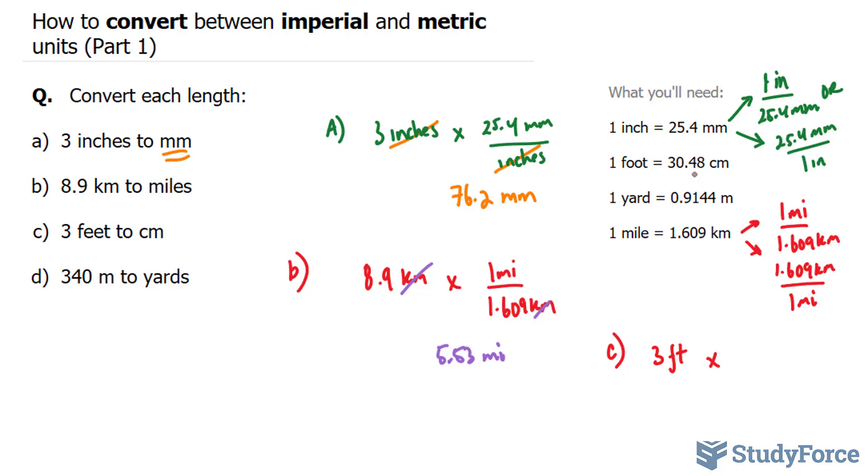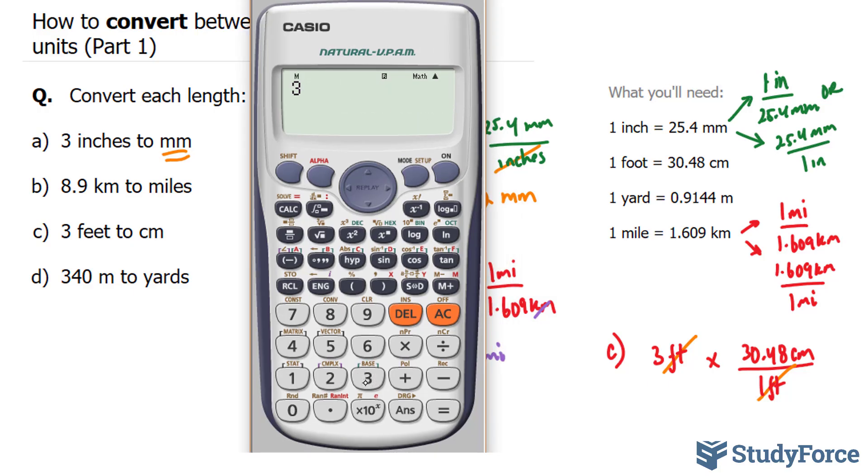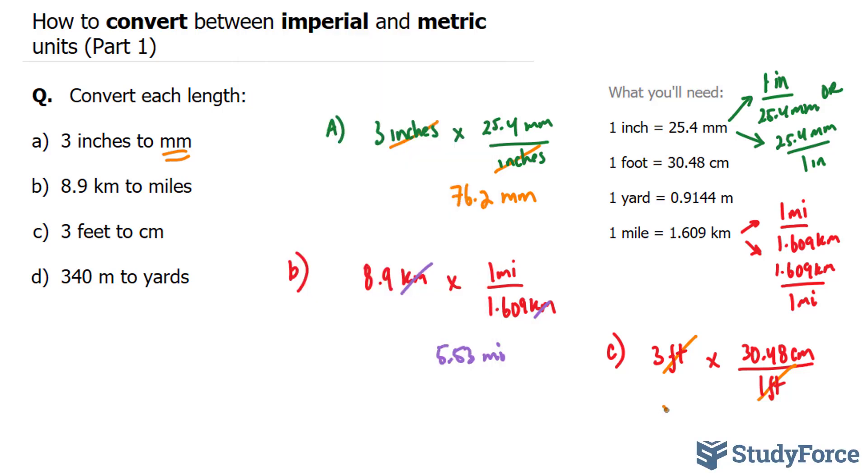This can be written in two ways. It can be written with the foot at the top or the foot at the bottom. We'll choose the version where the foot is at the bottom. Using our calculator, we end up with 3 times 30.48 divided by 1. We don't need to put that 1 there. Our final answer is 91.44. 91.44 centimeters exists in 3 feet.